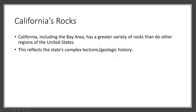The rocks that we see in the coast ranges are primarily of the accretionary wedge from the subduction of the Farallon Plate. Most of the Bay Area is a variety of different rocks, a lot of which are metamorphic, and it's very complex in this region because of the tectonic and geologic history during the formation of California.